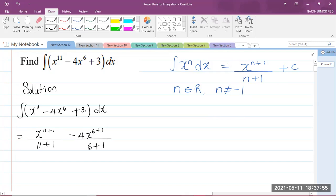And then we integrate 3. You can imagine that 3 is the same as 3x to the power of 0. So, if you should add 1 to the power and divide by that new power, what you will get is plus 3x.